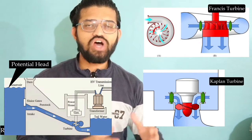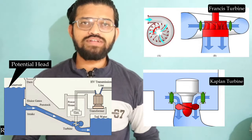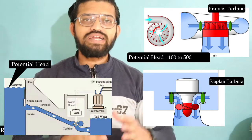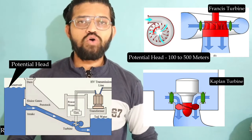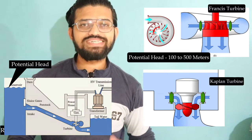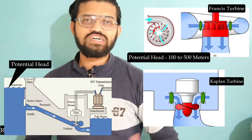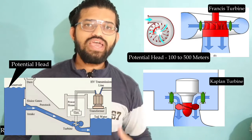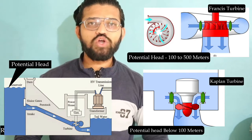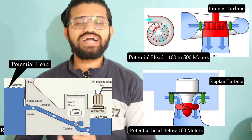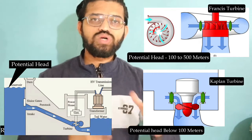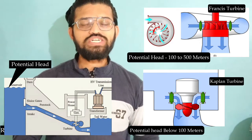If we think in terms of the potential head available, the Francis turbine is suitable for medium head — around 100 to 500 meters. In this scenario we go for the Francis turbine. Whereas if we have heads below 100 meters, we go for the Kaplan turbine, because the Kaplan turbine is suitable for lower potential heads.